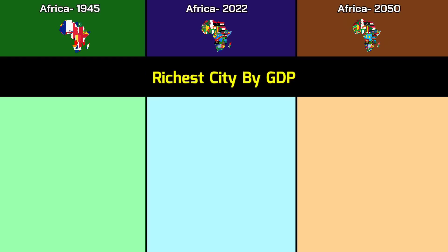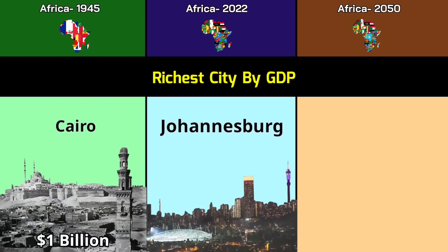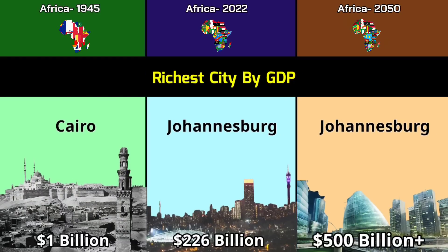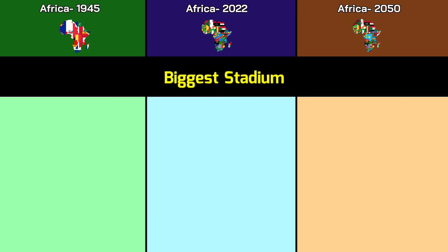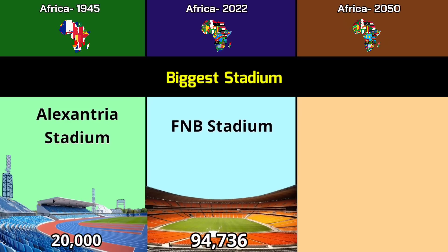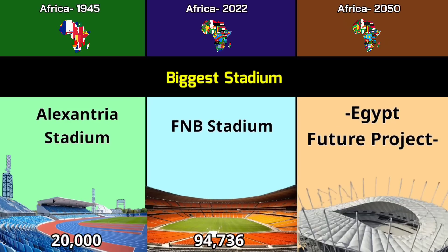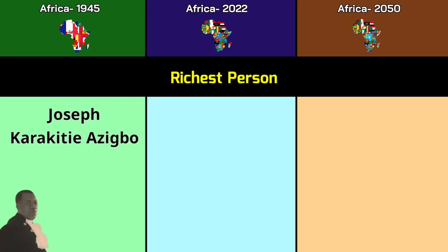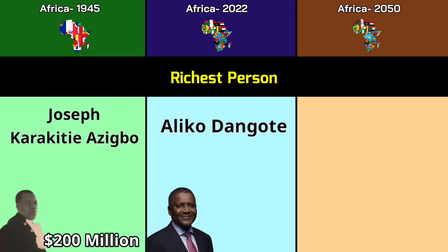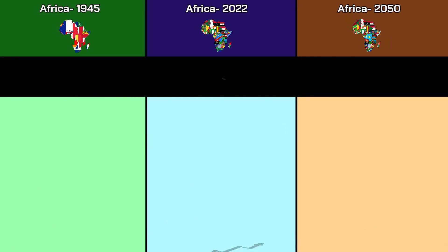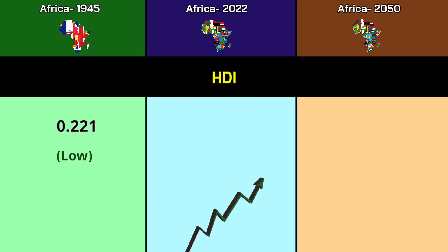Most powerful country: British Africa in 1945; Egypt in 2022 and 2050. Most populated city: Cairo at 2.5 million in 1945; Cairo at 22 million in 2022; Kinshasa at 35 million in 2050. Richest city by GDP: Cairo at 1 billion dollars; Johannesburg at 226 billion in 2022; Johannesburg at more than 500 billion in 2050. Biggest stadium: Alexandria Stadium at 20,000 in 1945; FNB Stadium at 94,736 in 2022; Egypt future project at more than 100,000 in 2050. Richest person: Joseph Karakati Azigbo with over 200 million dollars; Aliko Dangote at 14 billion; and an unknown person projected at 20 billion in 2050. HDI: 0.221 (low) in 1945; 0.577 (medium) in 2022; 0.680 (medium) in 2050.